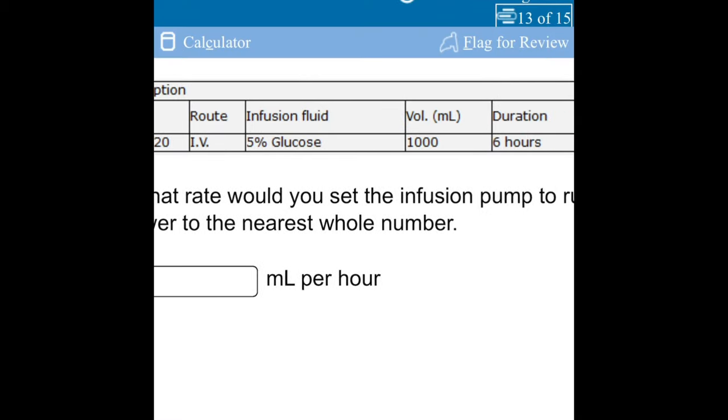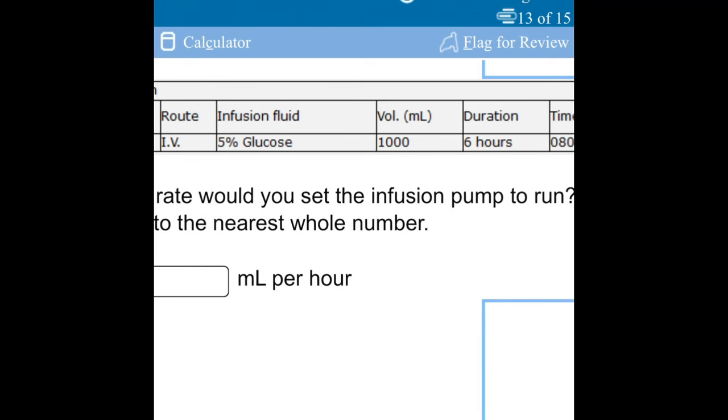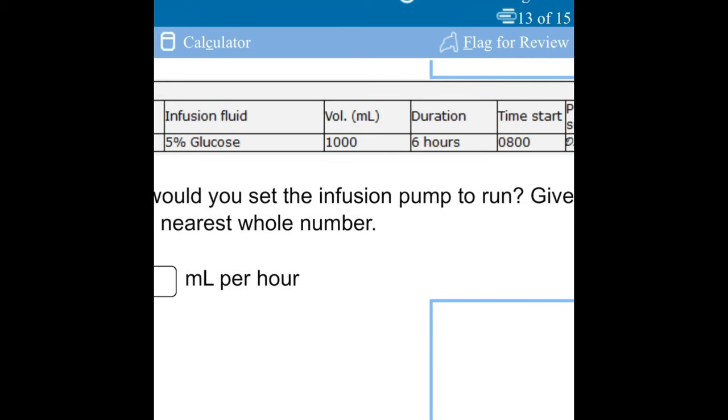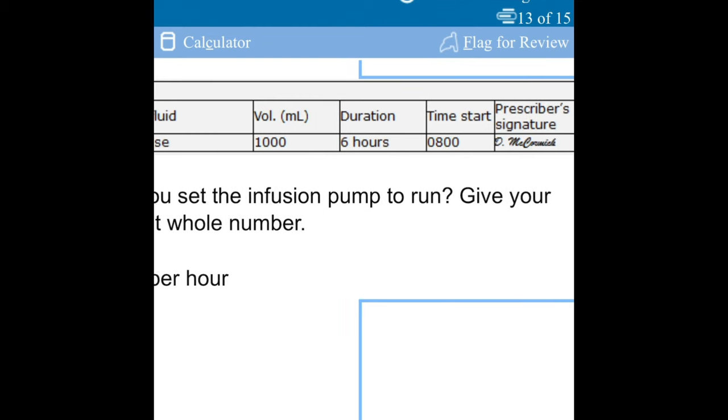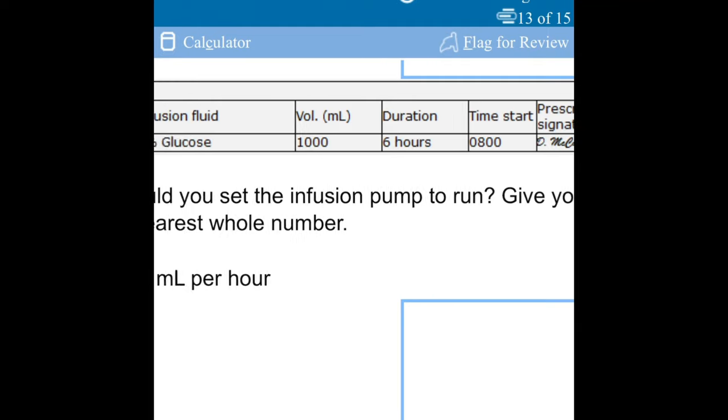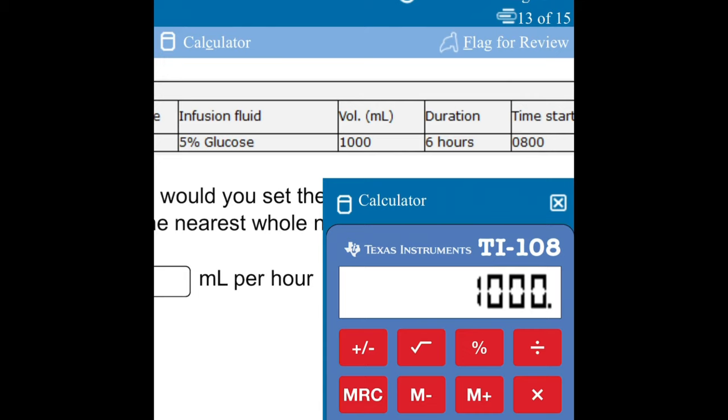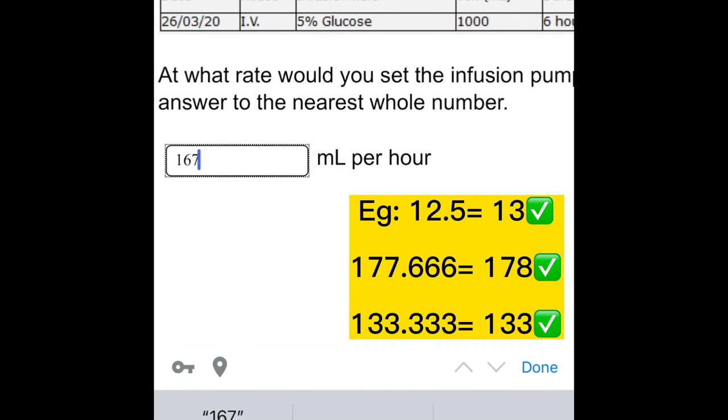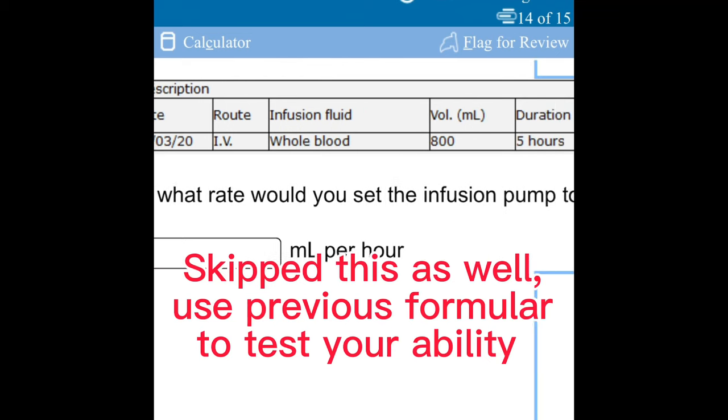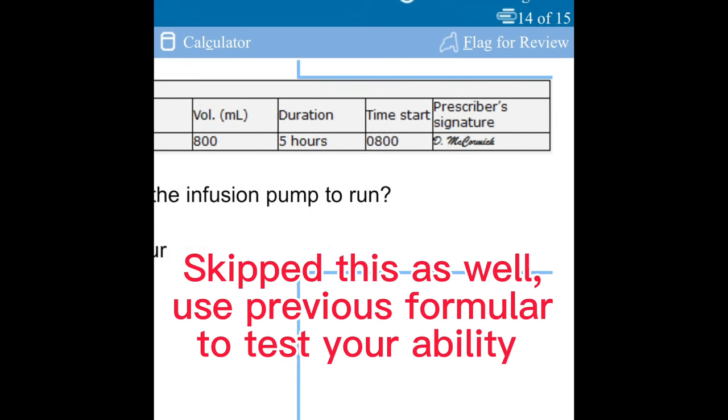We have another similar question here, but they're asking you to provide your answer to the nearest whole number. When you do your calculation, please check the figure you got and make sure if you're supposed to round it, please do so. Let's solve it. We are going to divide the volume in mL, which is a thousand, by six. Our answer will be 166.666. The instruction is telling us to round our answer to the nearest whole number. We are going to round it, so you will get 167 because the point after the last six was above five.